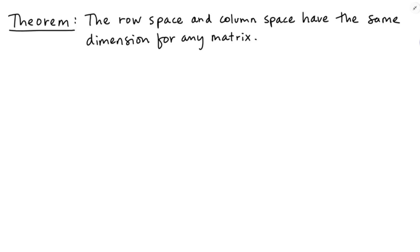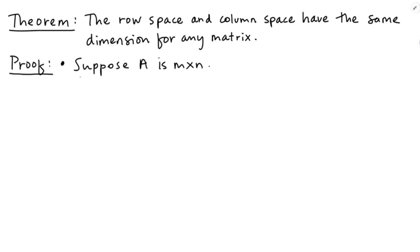In this video I'm going to be proving that the row space and column space of a matrix have the same dimension, no matter the matrix. I'm going to start off by supposing that I've got an M by N matrix and I'm going to call it A. We're going to suppose the dimension of the row space of A is R, and then we're going to show that the dimension of the column space must also be R.